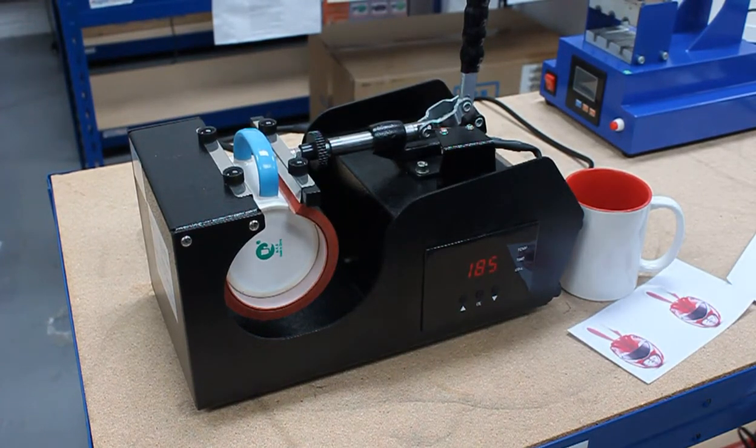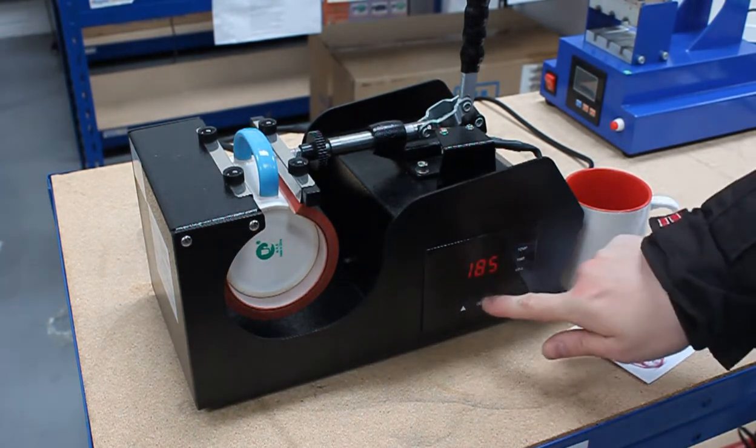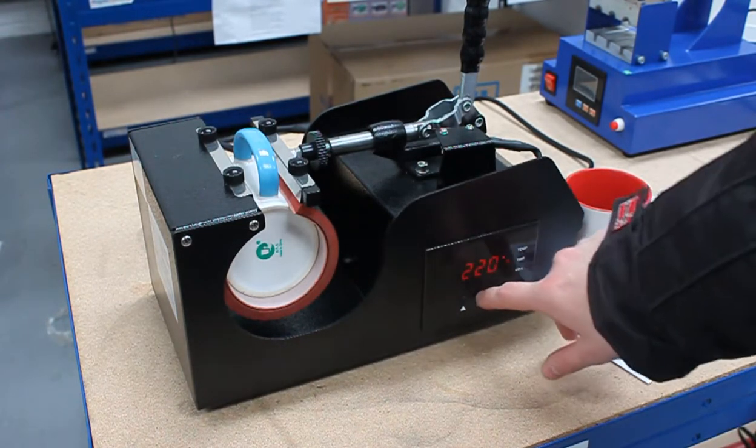I'll be showing you how to sublimate the mug. First of all, make sure that you set your temperature to 185 for 220 seconds.